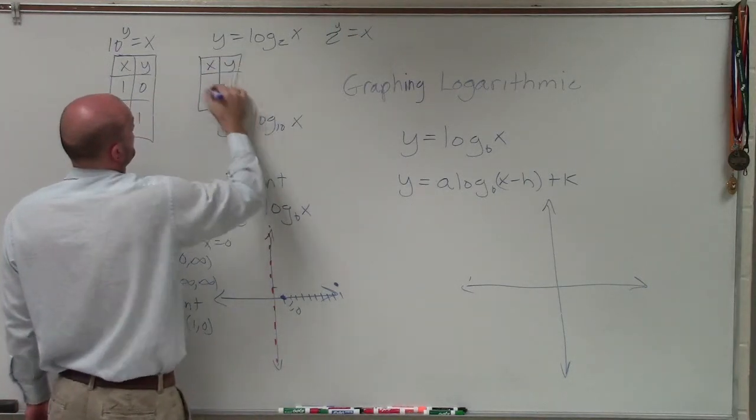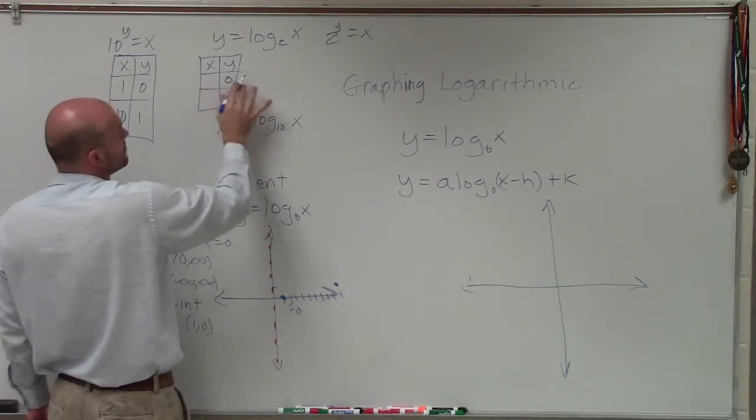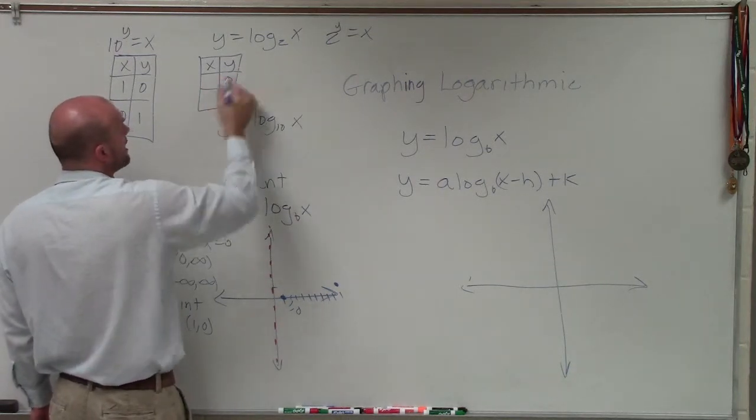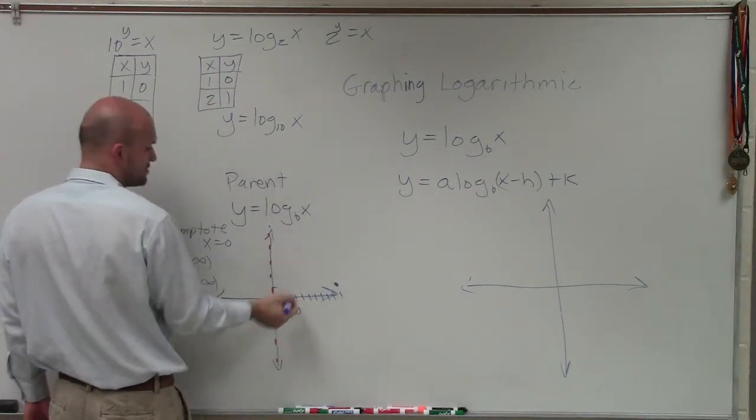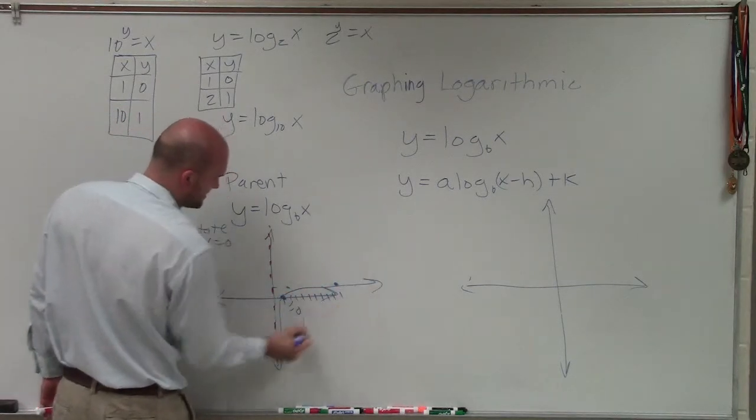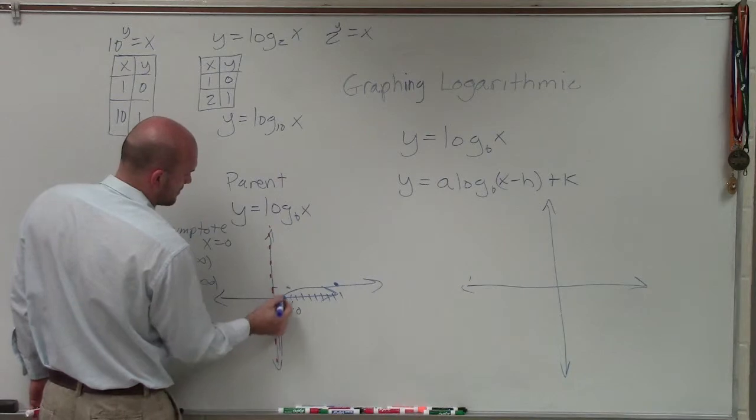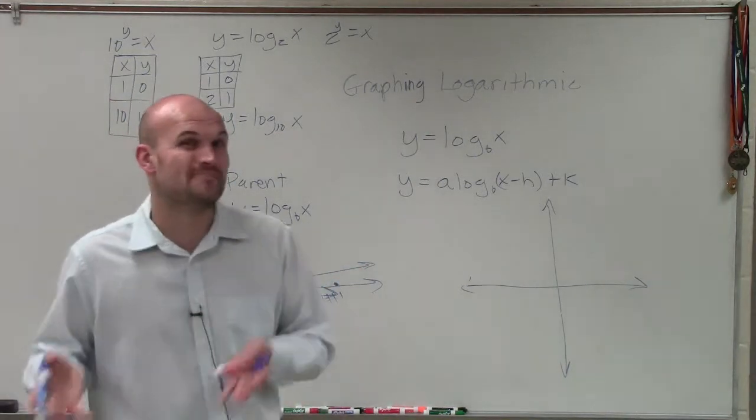what we notice is, when I put 0 in for y, I'm going to have x equals 1. And then when y equals 1, x equals 2. So therefore, it would be over 2, up 1. So I can have two relatively very different graphs just based on what the base is.